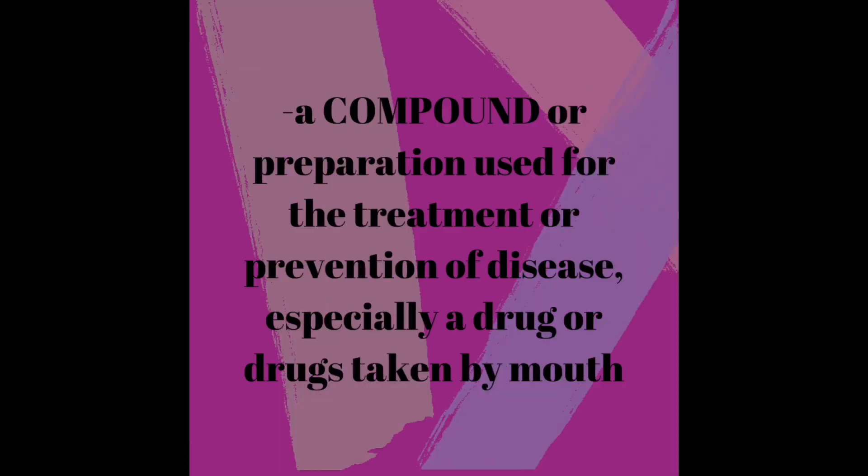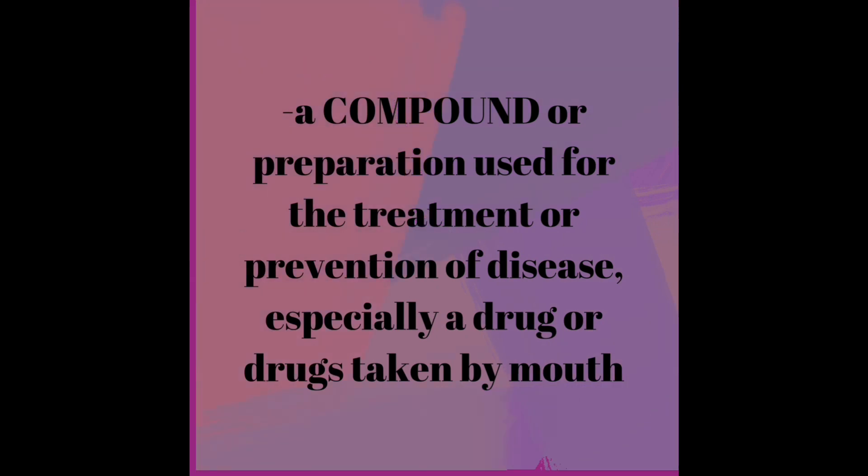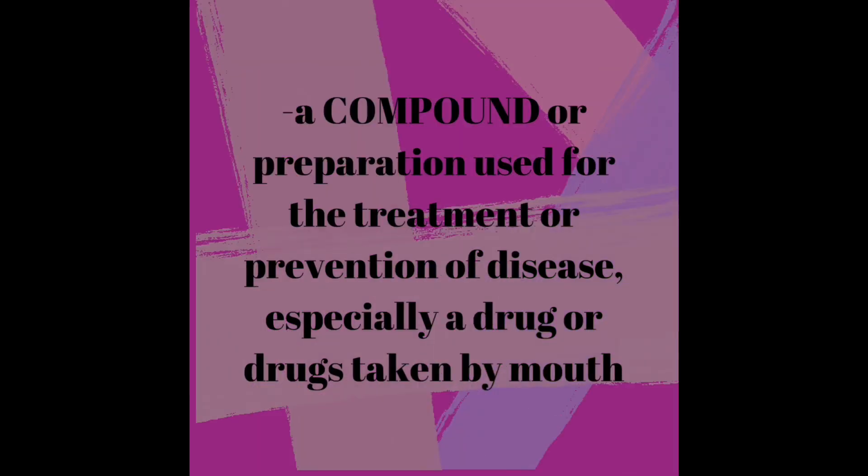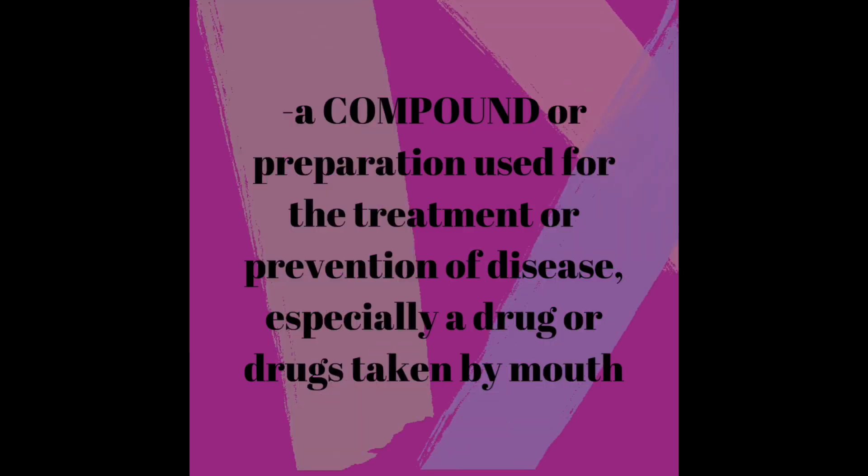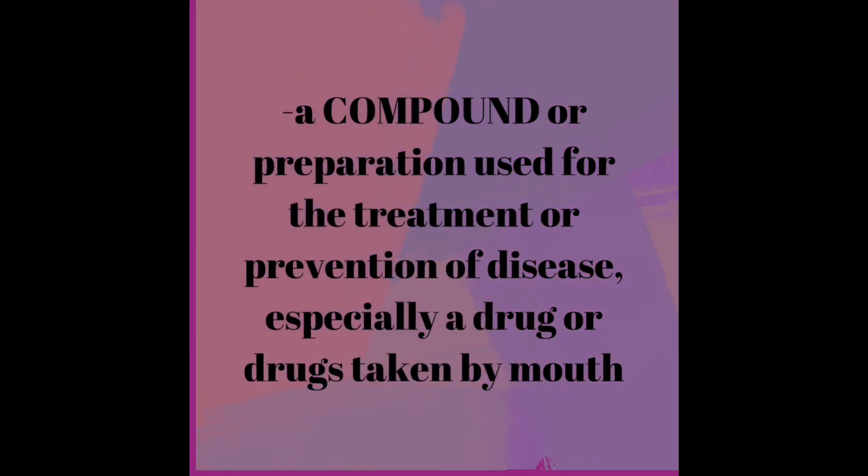I like to break down definitions, so let's define medicine first. Medicine is a compound or preparation used for the treatment or prevention of disease — especially a drug or drugs that can be taken by mouth. Examples of that include Vicodin, Valium, and Xanax. But have we ever taken time to consider where they fall on the drug classification list? Vicodin is a Schedule 2 drug; Xanax falls under Schedule 4.